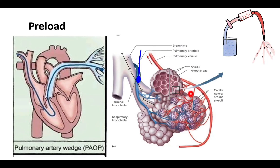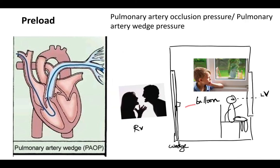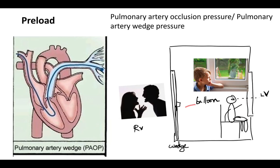An analogy: the right ventricle is like a noisy room with fighting parents. When the balloon is inflated — like closing the door — the sensor (the child) no longer hears the noise from the right heart. Instead, it can look through the window — the pulmonary capillaries — and sense the pressure of the left ventricle. This is the pulmonary artery wedge pressure, indicating ventricular filling or preload.